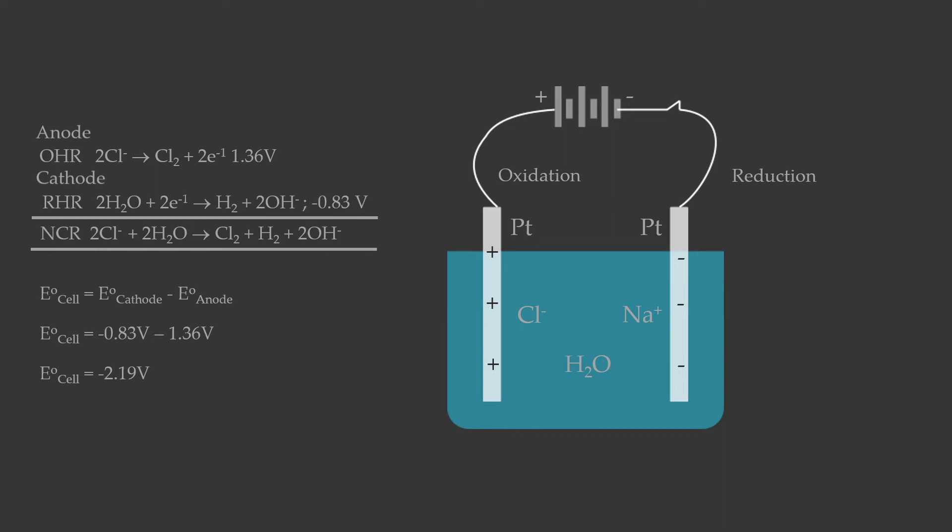Since the E°cell value is negative, the cell reaction does not occur spontaneously. An electrolytic cell is one where the reaction is forced to take place by providing external energy, so the negative value is perfectly acceptable here.